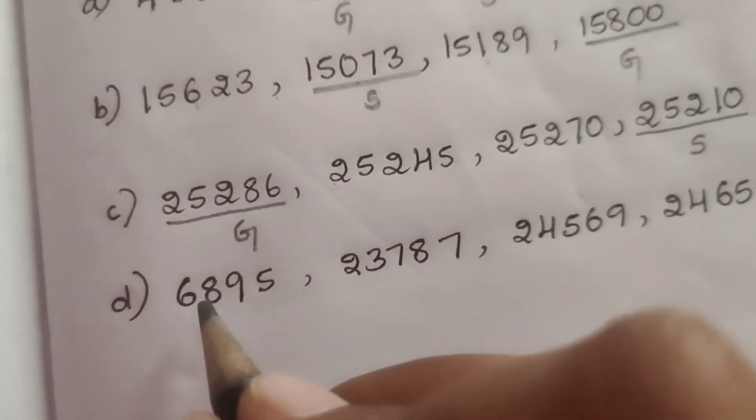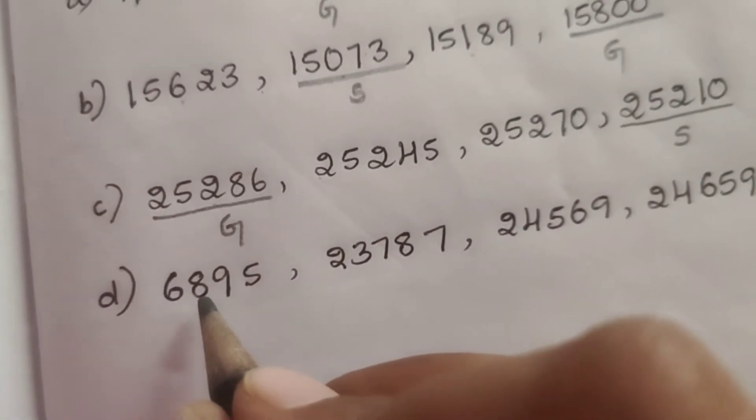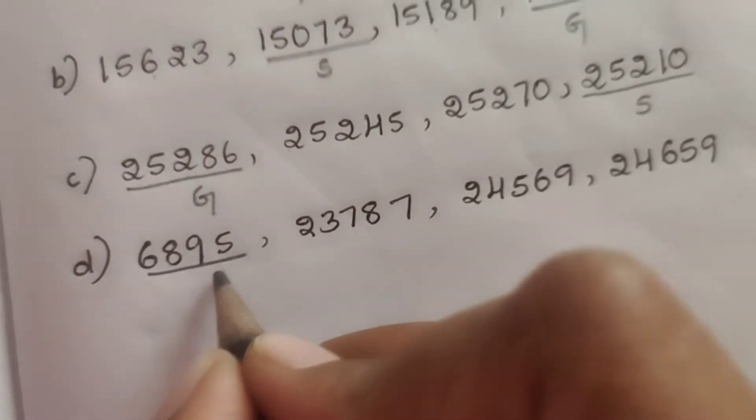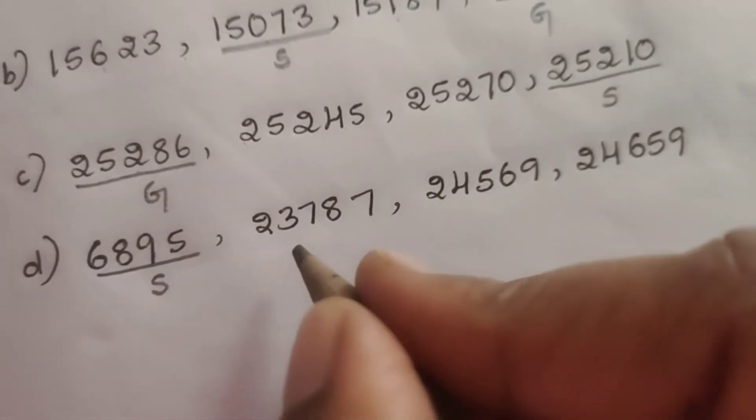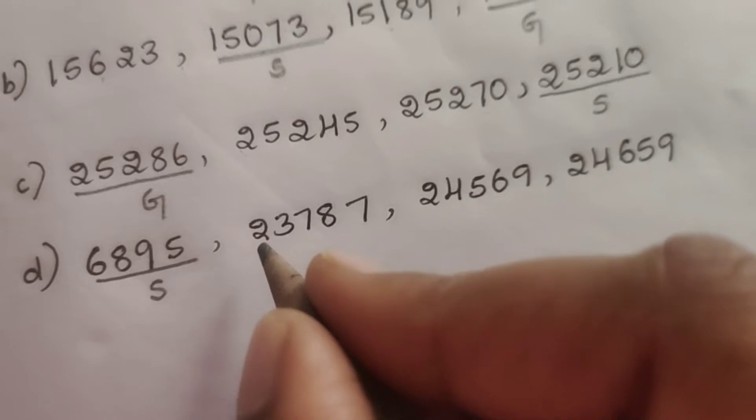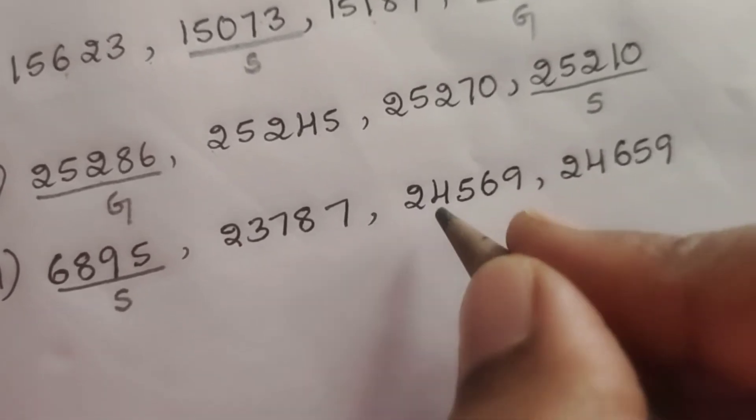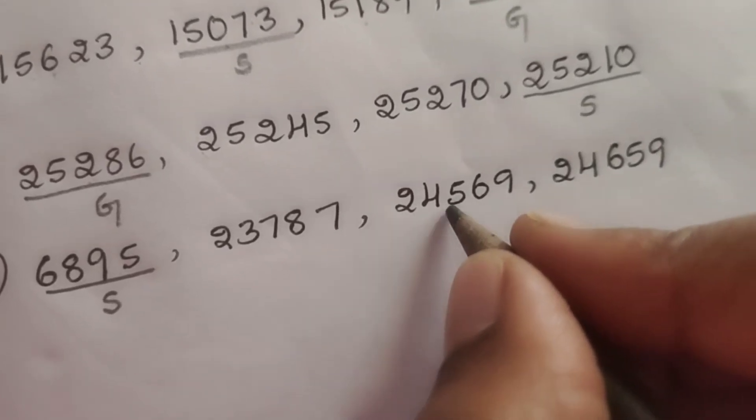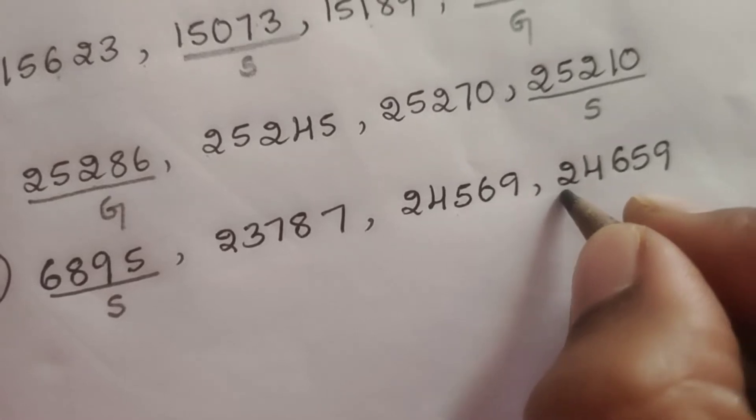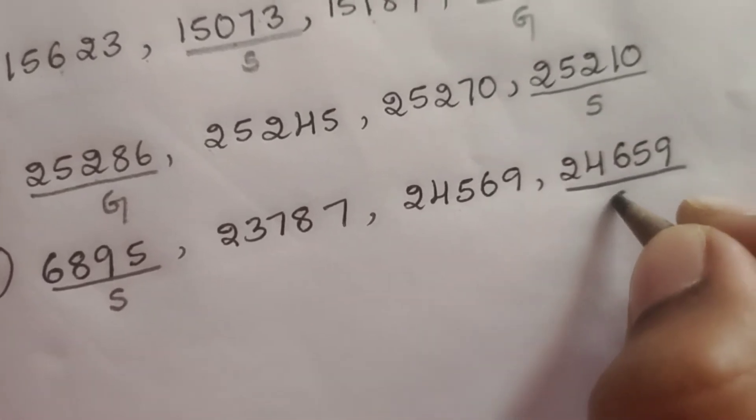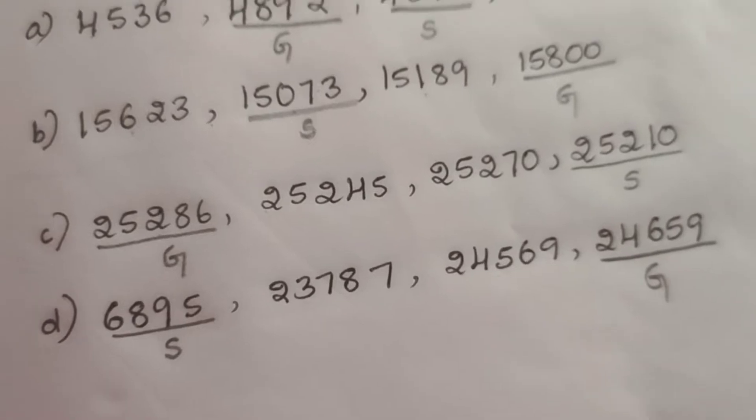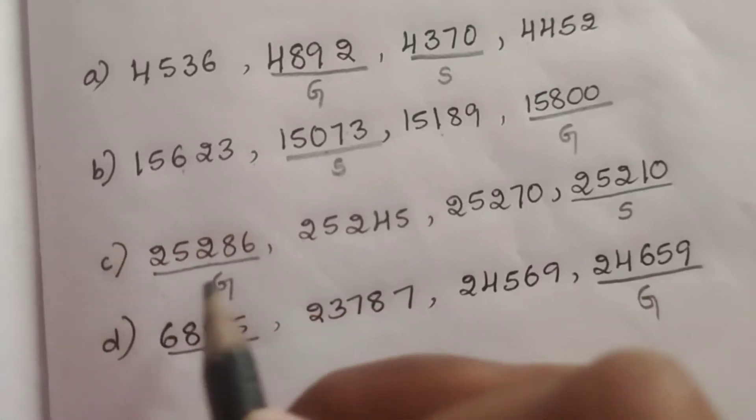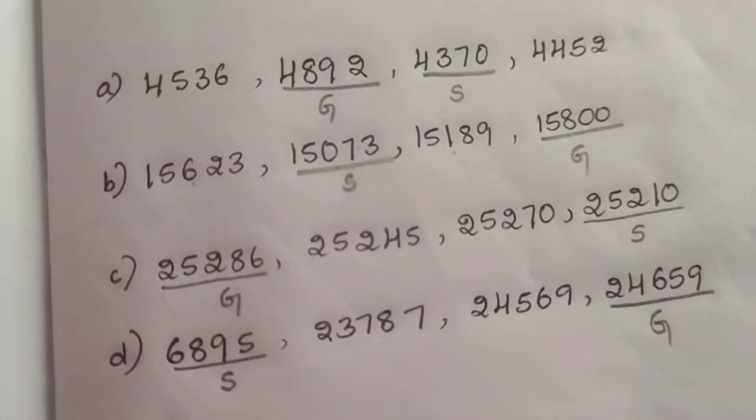Last one: 6895, 23,787, 24,569, 24,659. Here 6000 is there, 23,000, 24,000 is there. So this is the smallest, you can easily find out. Now in this, 6895 is the smallest. In these two, 24,000 is common. Now in the hundreds place, here 5 is there, here 6 is there. So 24,659 is the greatest number. Like this you have to compare thousands, hundreds, tens, then mark the greatest and smallest number.